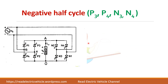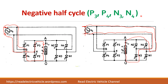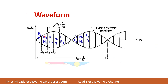During the negative half cycle, P3 and P4 are turned on and N3 and N4 are turned on alternately — the sequence P1, P2, N1, N2 is repeated similarly. The bridge type is similar to the midpoint type in operation; the difference is that in the midpoint type only one device conducts at any time, whereas here two devices conduct simultaneously. The output frequency is the same: F0 = 6Fs.